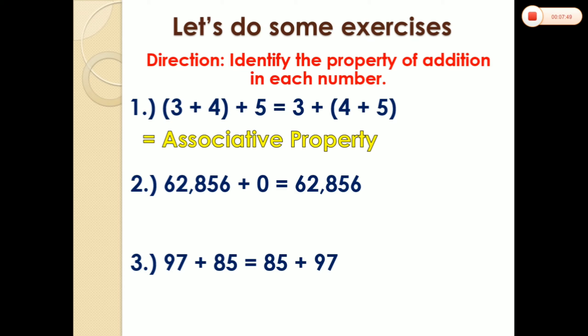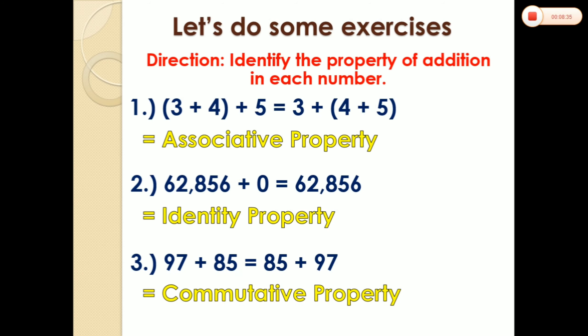How about number 2? We have 62,856 plus 0 equals 62,856. What property of addition is this? The answer is identity property. And lastly, 97 plus 85 equals 85 plus 97. What property of addition is this? The answer is commutative property.